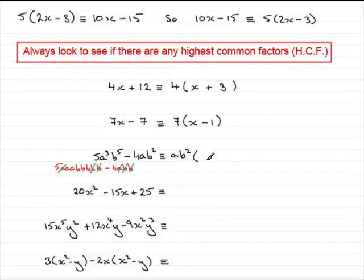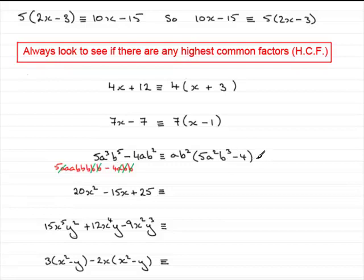So we put a bracket. What's left over in the first term after taking out ab squared? We've got 5 times a squared times b cubed — so 5a squared b cubed. What's left in the second term? We've taken out ab squared, so we're just left with minus 4. So the answer is ab squared bracket 5a squared b cubed minus 4. When you multiply ab squared by each of these two terms you get back what we started with. With a bit of practice you won't need to write out all the expanded notation.